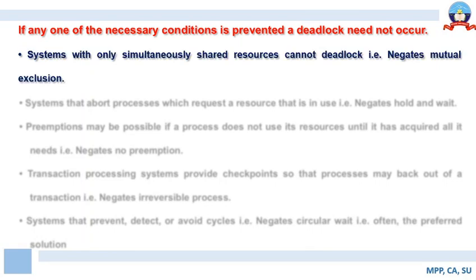Systems with only simultaneously shared resources cannot deadlock. This implies we need to negate mutual exclusion. We have learned in the previous class that one of the primary conditions for deadlock to happen in a system is mutual exclusion.